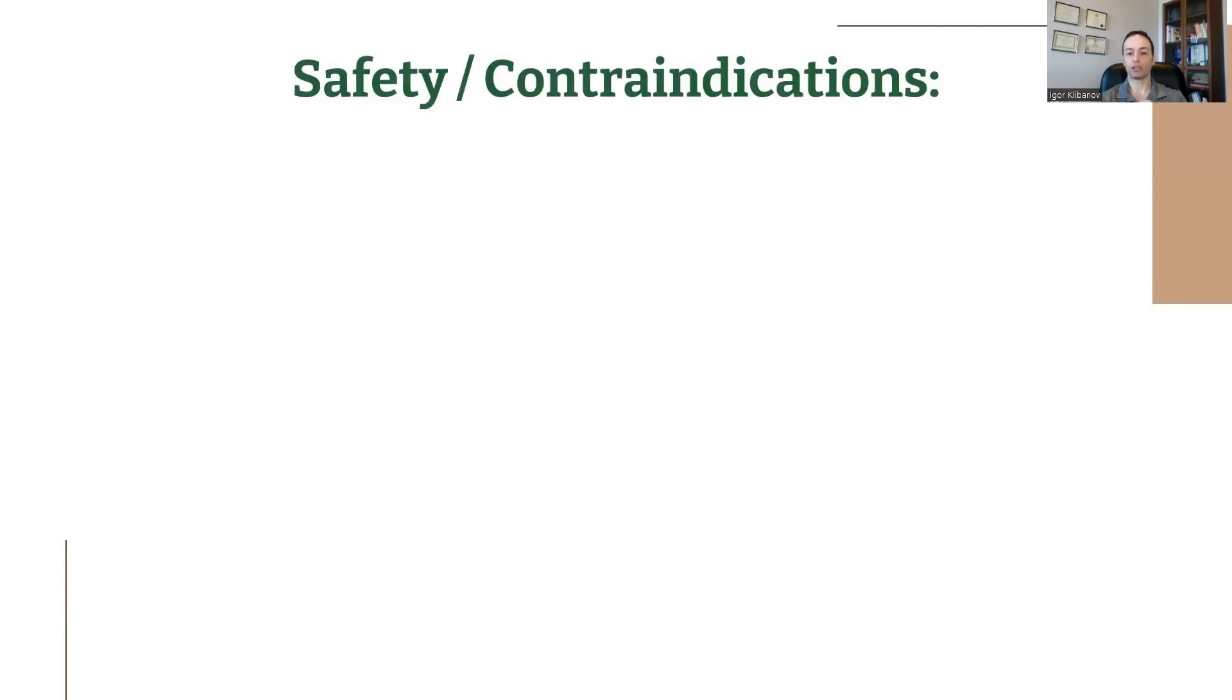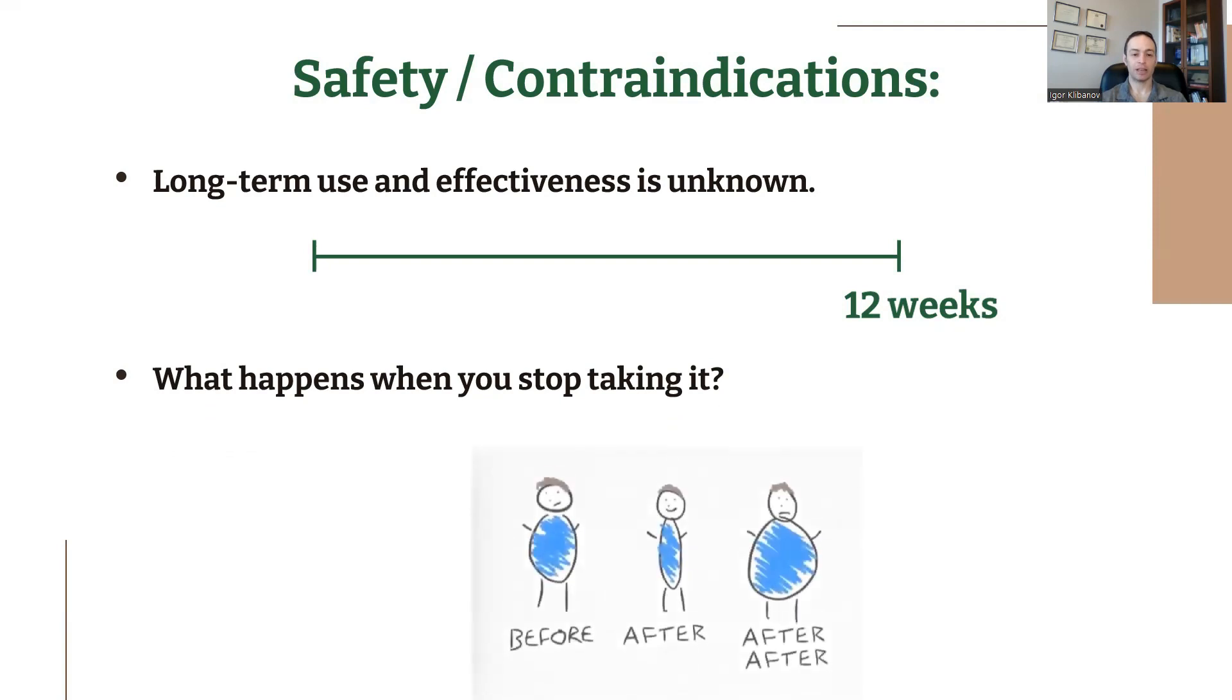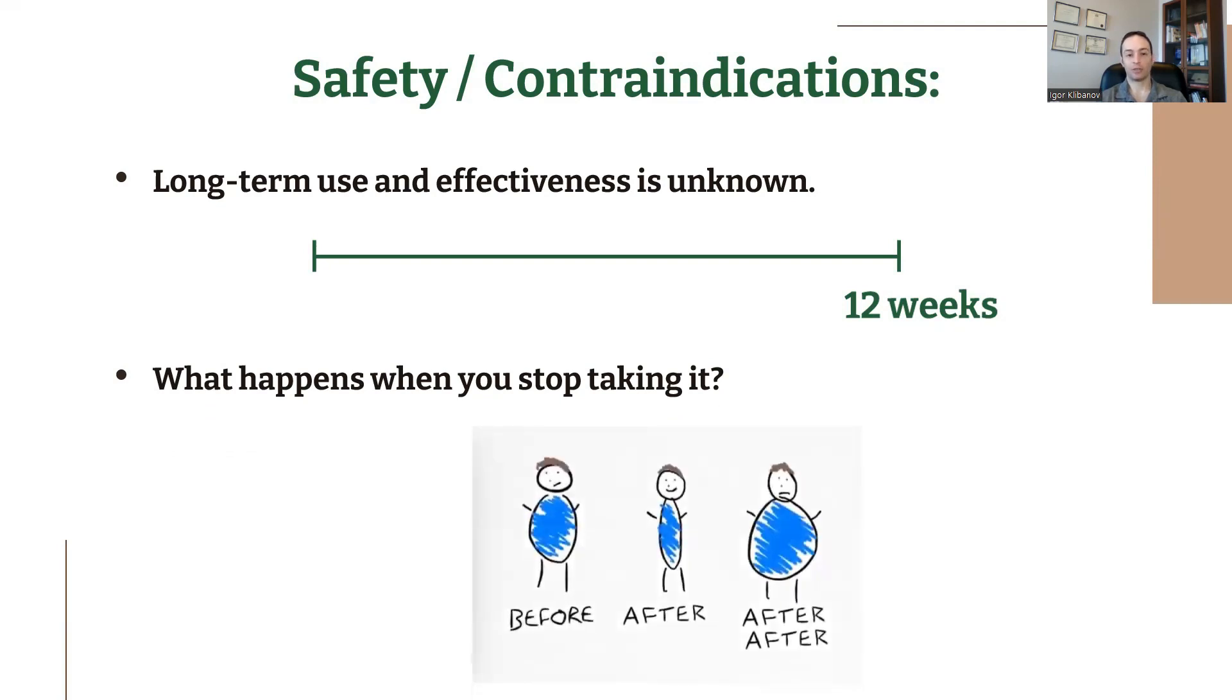Now, is it safe? Well, long-term use and effectiveness is unknown because again, the greatest length that's studied is 12 weeks. What happens beyond the 12 weeks? The answer is we don't know. Also, what happens when you stop taking it? So you take green coffee bean extract, you lose body fat. Now, do you take it forever and maintain the fat loss or do you stop taking it and you regain your body fat? That part is also not clear. Do you maintain the appetite suppressive effects or does your appetite come back? Again, this part is not clear beyond the 12-week period.